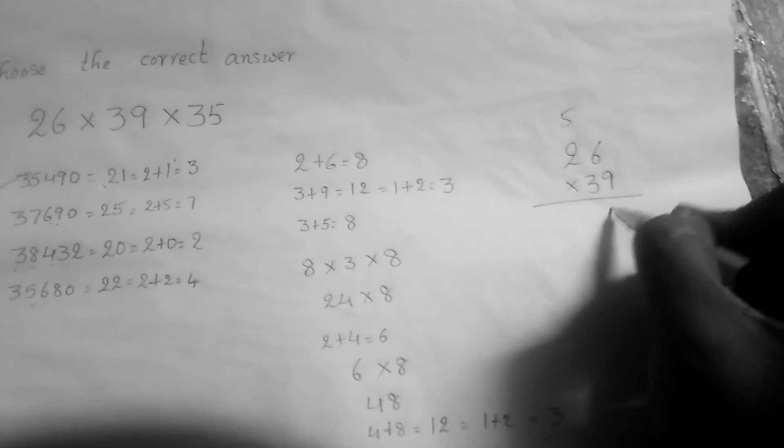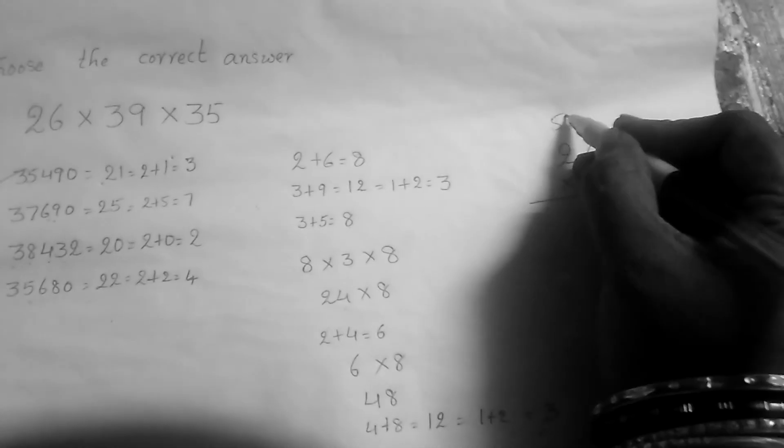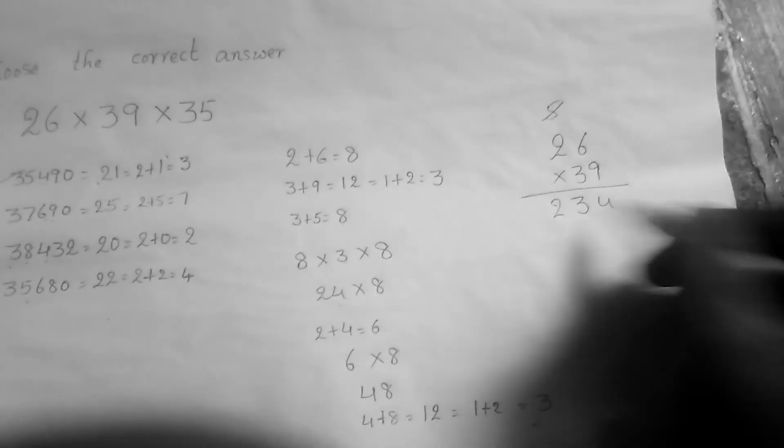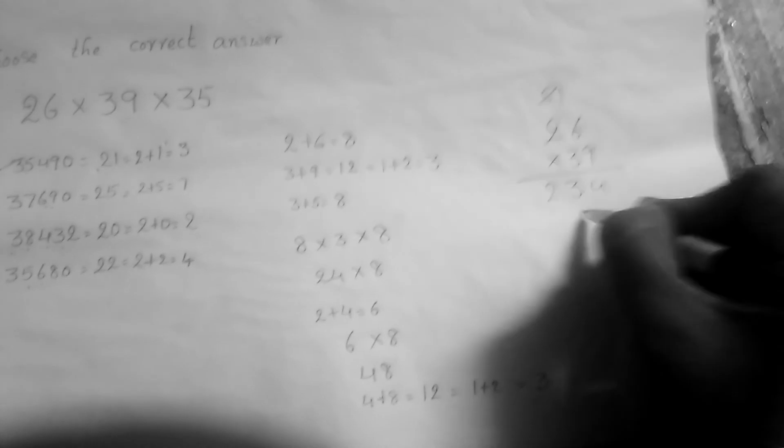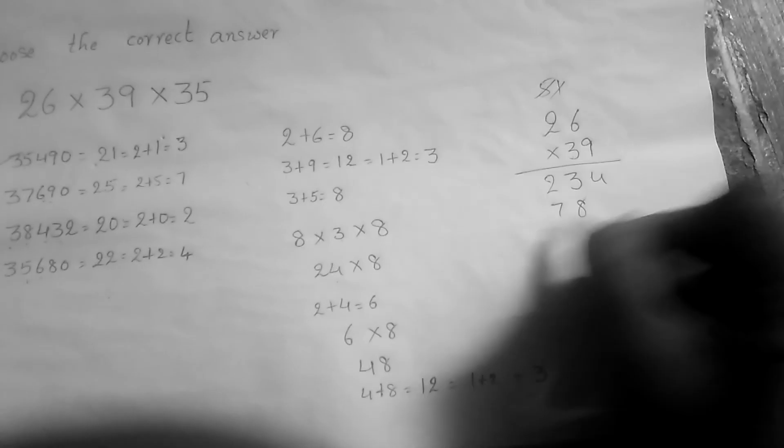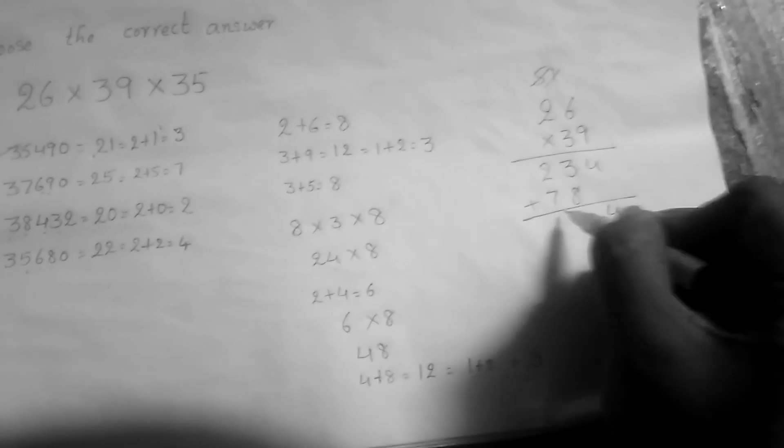9 times 6 is 54, so write 4 and carry 5. 9 times 2 is 18 plus 5 is 23. 3 times 6 is 18. 3 times 2 is 6, plus 1 is 7. Now you have to add these numbers. 7 plus 3 is 10, giving us 1,014.